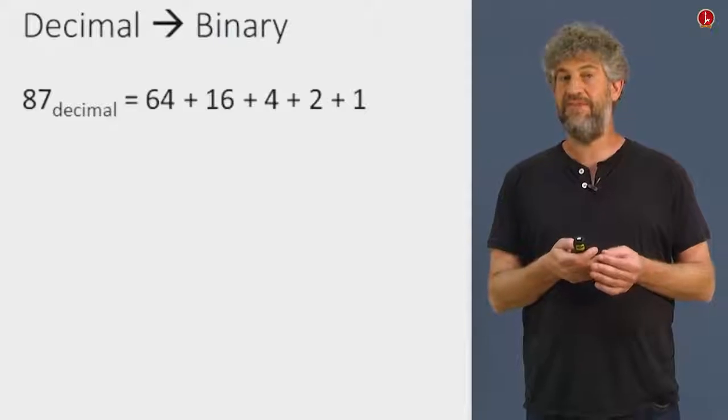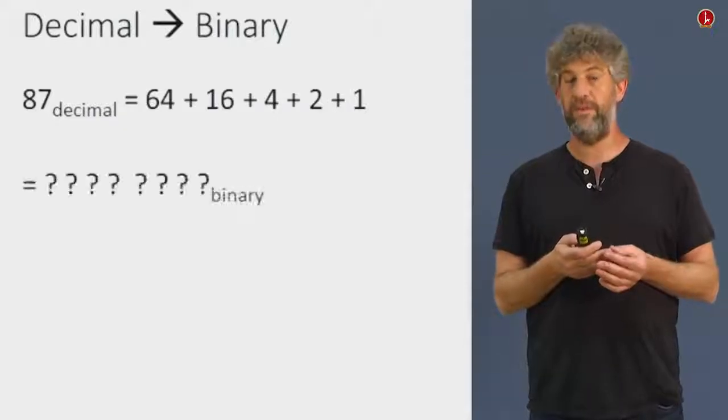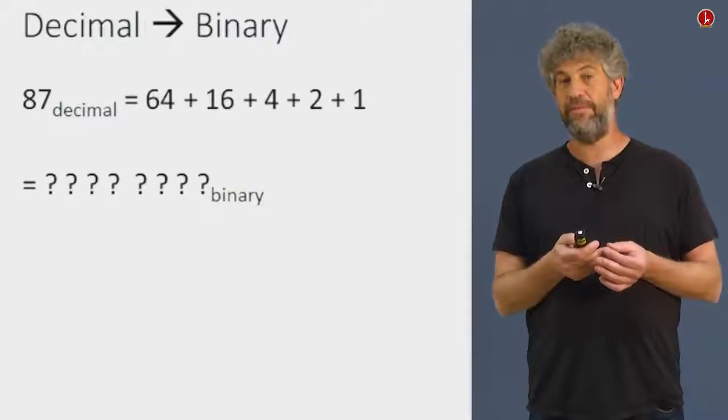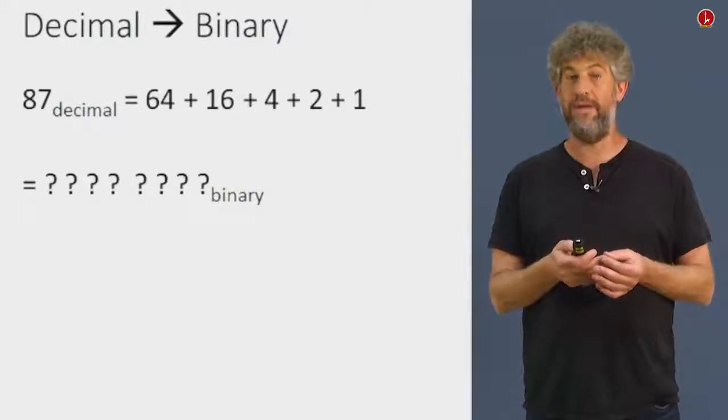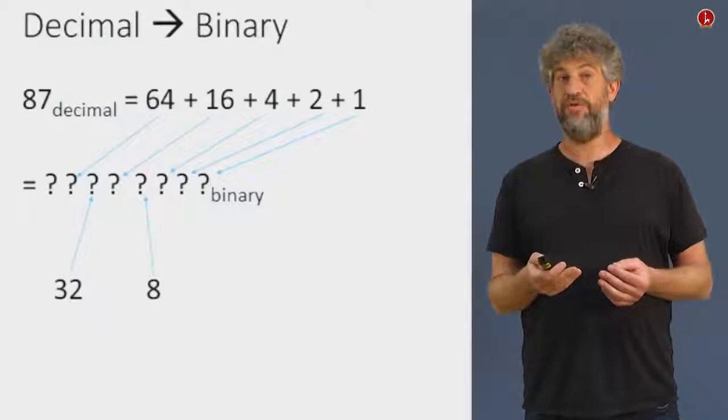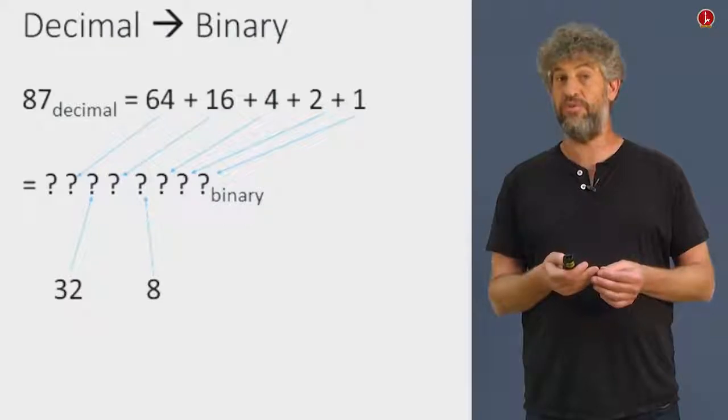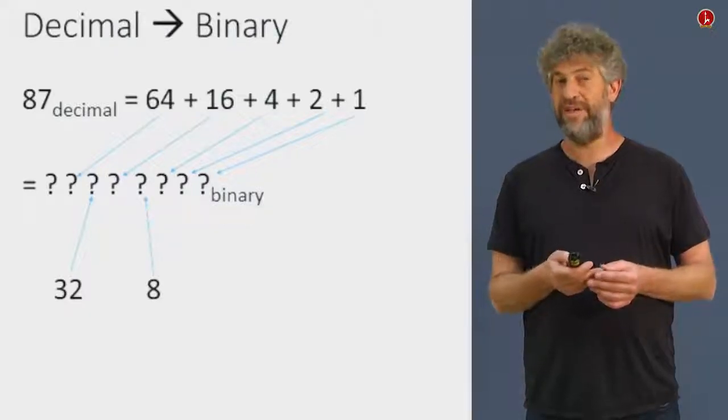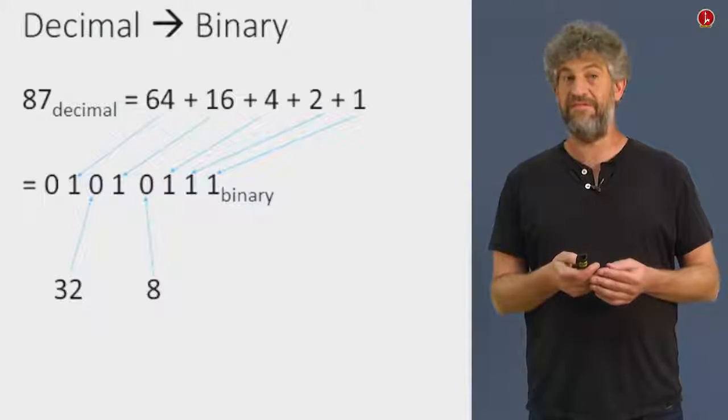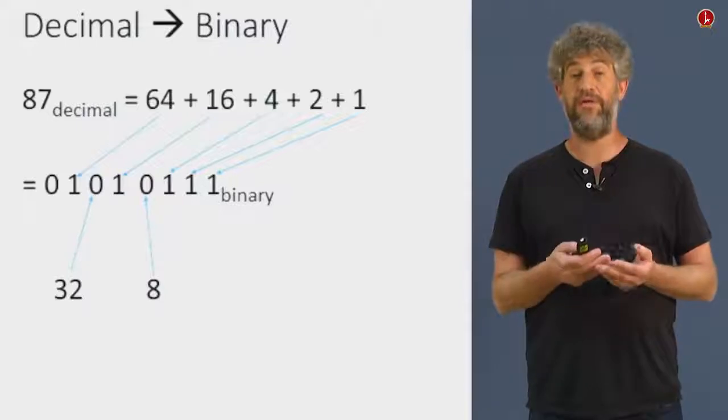And once we have that, from this representation of the decimal number as a sum of powers of 2, we can quite directly actually get the binary representation. How do you do it? Well, every time we have a power that appears in the sum, we need to put a 1 in the bit there. And whenever the power is not part of the sum, we put a 0 there. So for example, look at the rightmost bit, that corresponds to the 1's. We do have a 1, so that's going to be a 1. On the other hand, if you look at the third bit from the right, which corresponds to the 8's, since we don't have 8 in the sum here, we're going to have 0 there. And that's basically a general way how you can take any number and convert it to binary.